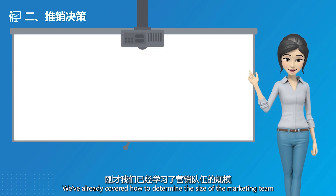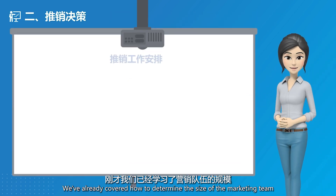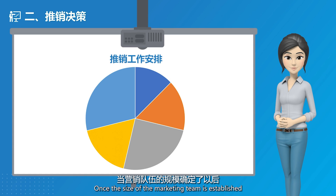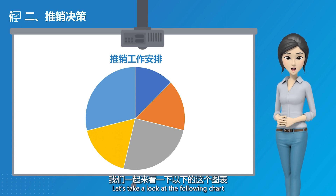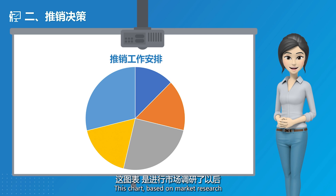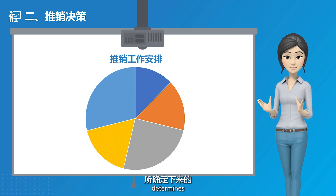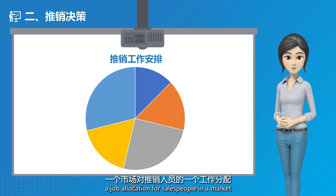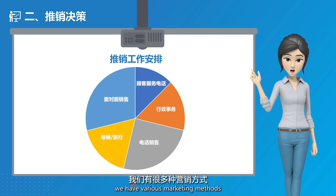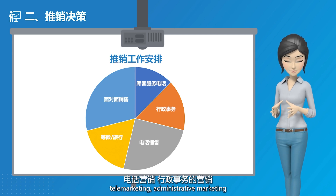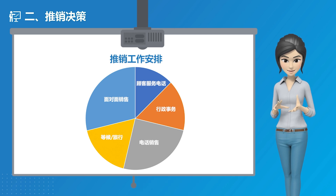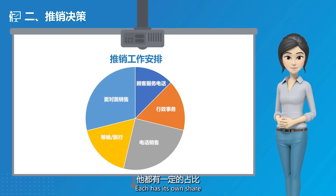Once the size of the marketing team is established, how do we allocate tasks? This chart, based on market research, determines a job allocation for salespeople in a market. In the sales process, we have various marketing methods, such as face-to-face marketing, telemarketing, administrative marketing, and sales during waiting or travel times, each with its own share.